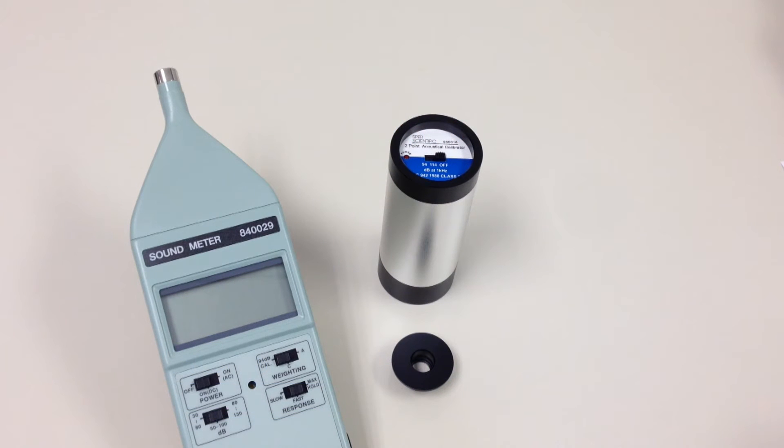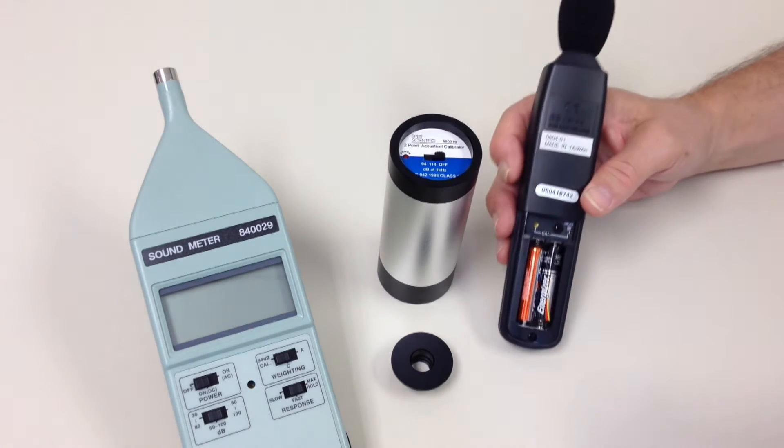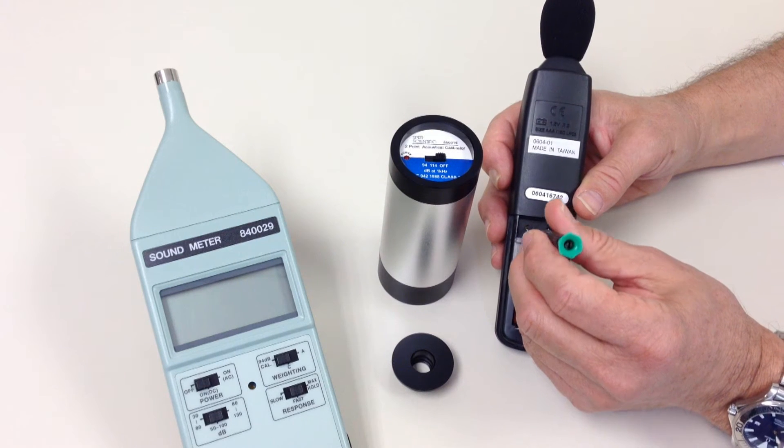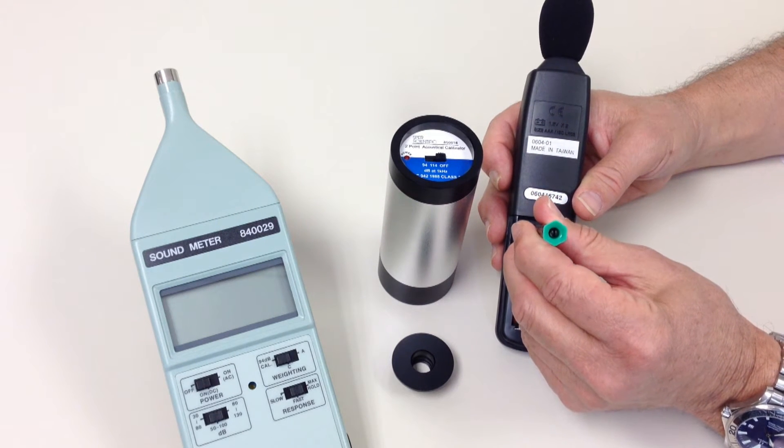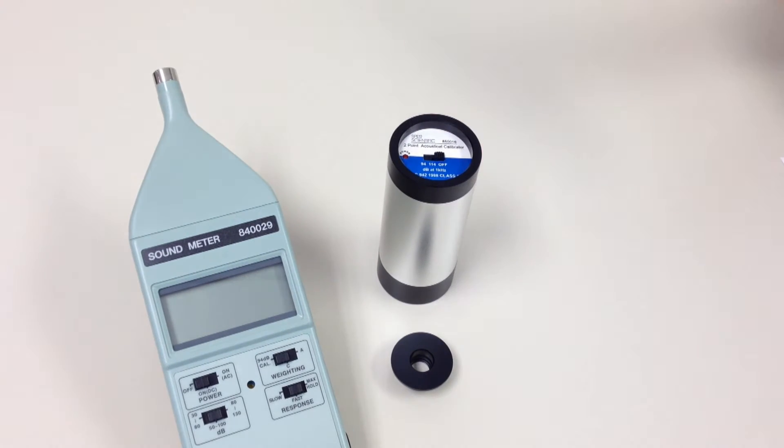All sound meters drift with time and require periodic recalibration. Some models have an internal oscillator that enables you to adjust the signal and correct the reading. But this doesn't take into account the microphone.